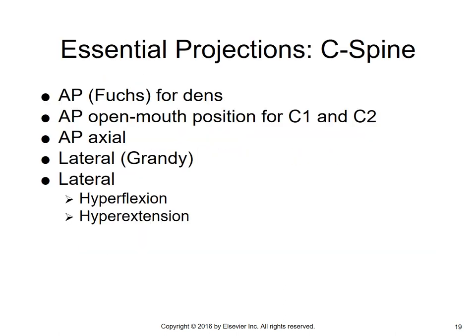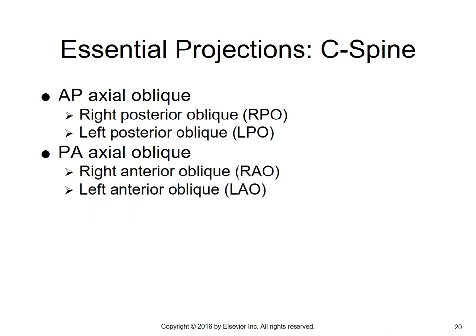The essential projections in Merrill's that you'll be questioned about on the registry include: the AP Fuchs method for the dens, the AP open mouth position for C1 and C2, the AP axial, the lateral called the Grandy method, the lateral in hyperflexion and hyperextension, AP axial obliques which are your RPO and LPO, and PA axial obliques which are your RAO and LAO.